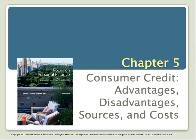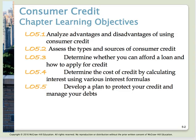We have lots of things to cover, so let's get started. Tonight we have five learning objectives. The first is to analyze advantages and disadvantages of using consumer credit. Consumer credit is the use of credit by individuals for personal needs. Among the advantages are purchasing goods when needed and paying for them gradually, handling financial emergencies, convenience shopping, and establishing a credit rating for future borrowing like a car or home purchase.